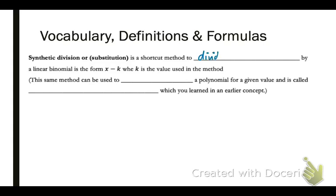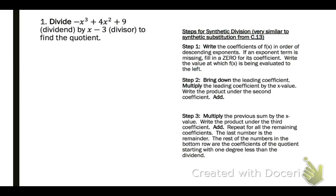This is a shortcut method to divide a polynomial by another polynomial, and specifically by a linear binomial in the form x minus some value. Just a reminder, this same method can be used to evaluate a polynomial for a given value, which you've done before, and in that context, it's called synthetic substitution. So this is a very versatile process that we use in math.